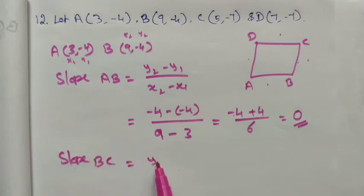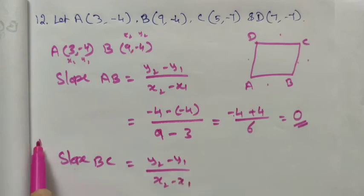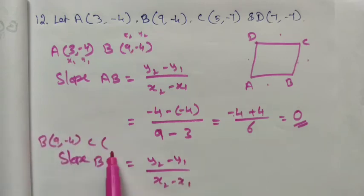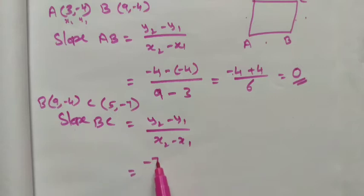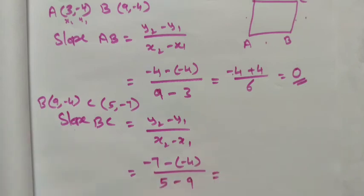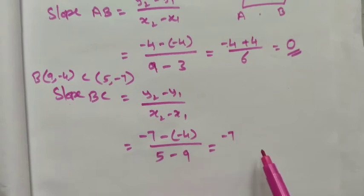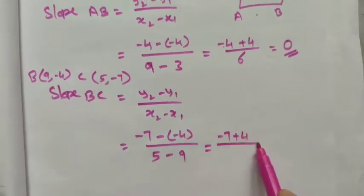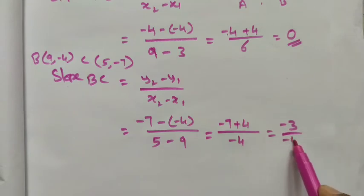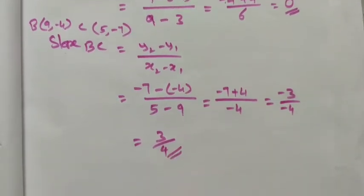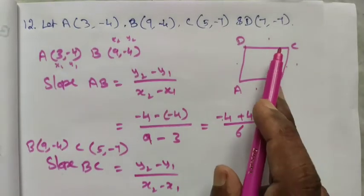Next, finding the slope of BC using the same formula (y2 - y1) / (x2 - x1). Point B is (9, -4) and point C is (5, -7). Substituting: (-7 - (-4)) / (5 - 9) = (-7 + 4) / (-4) = -3 / -4 = 3/4. Both numerator and denominator are negative, so we get 3/4 as the slope of BC.